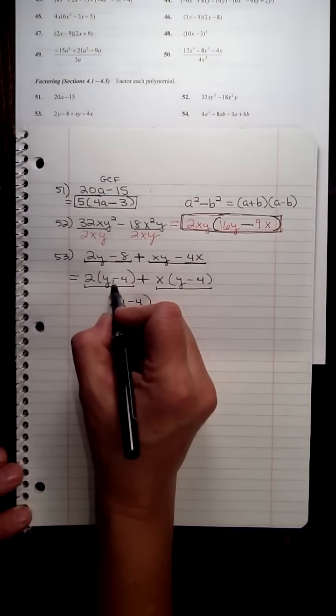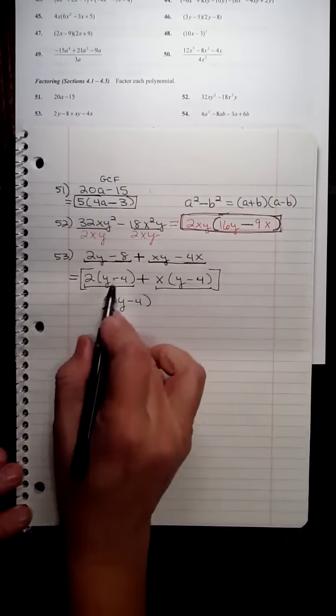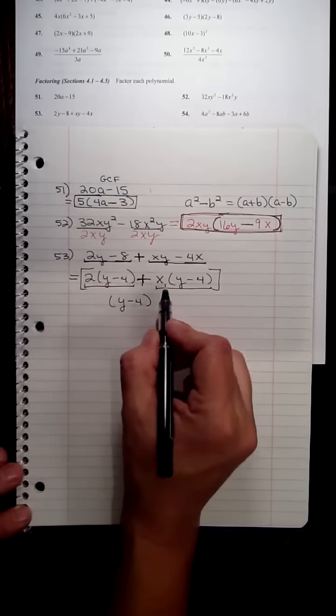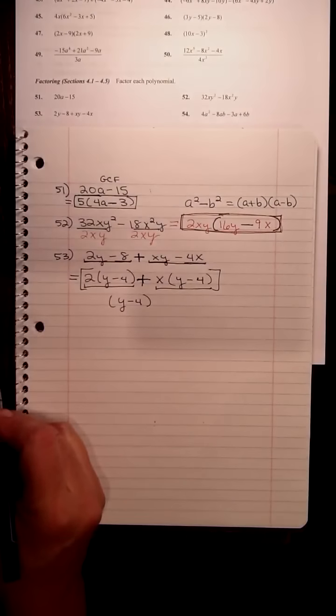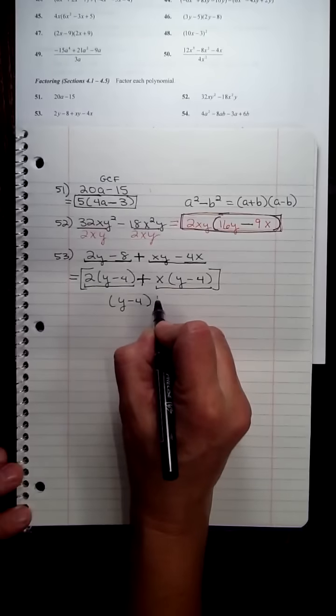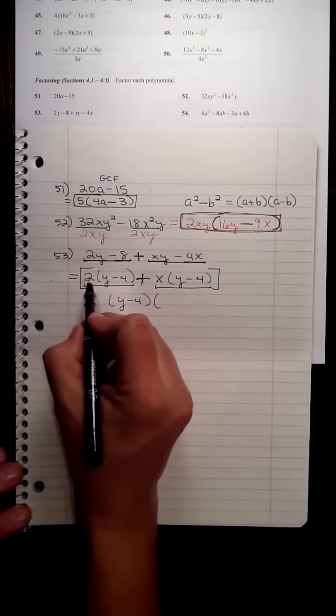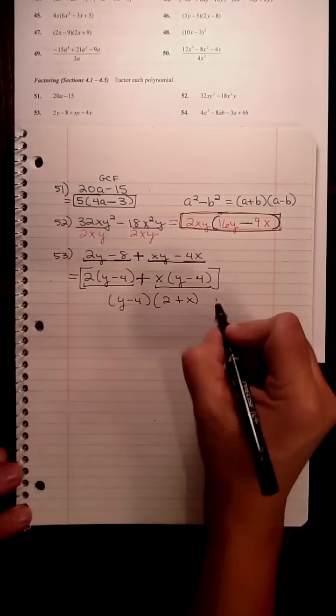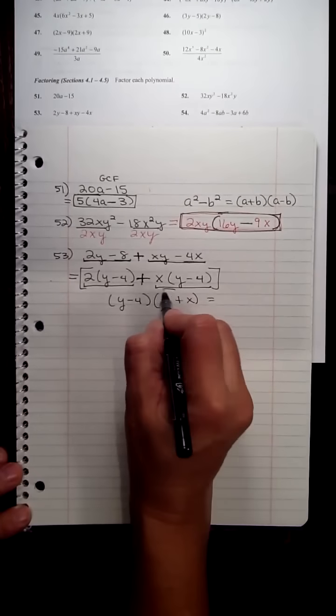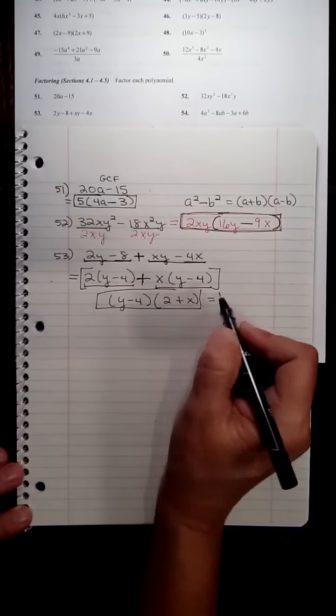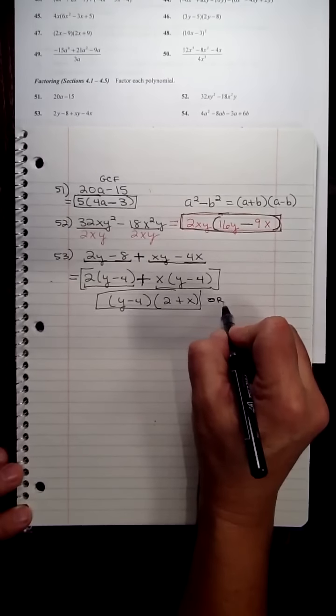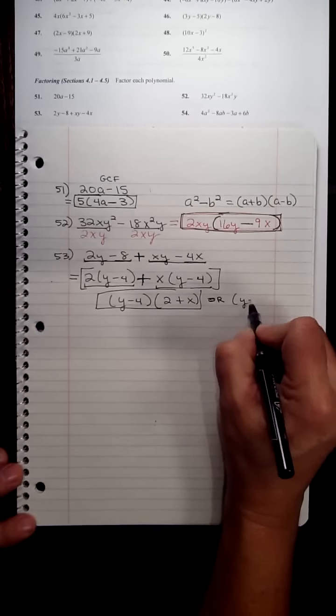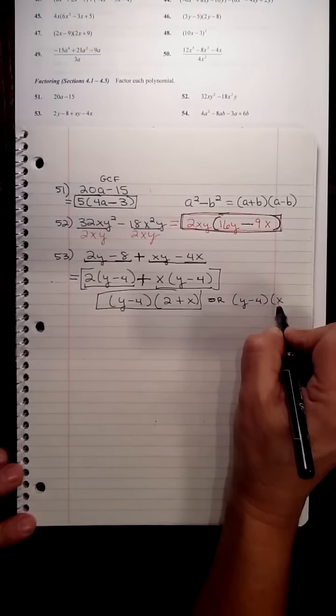So if you factor the y minus 4 to the front of this bracket, because right now this plus sign glues this giant first term with the giant second term. So they both have y minus 4, so if we bring that out, 2 plus x is what is left in the parentheses. So in the end, this answer is fine, or we can express it as y minus 4 times x plus 2.